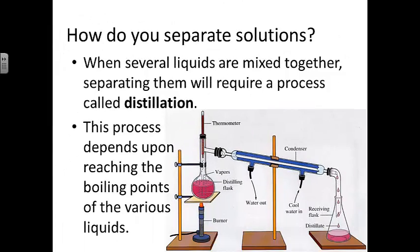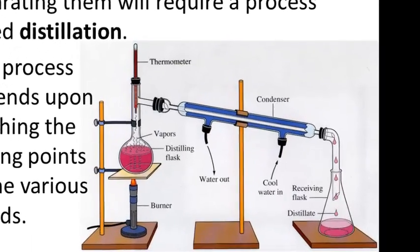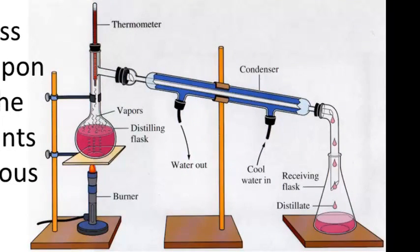To separate homogeneous mixtures or solutions, if you have several liquids mixed together you could use a process known as distillation. This process depends upon reaching the boiling points of the various liquids. As each new boiling point is reached, that particular component will boil off as a vapor and cool as it passes through the condenser — a central cylinder where cold water circulates around the outside. As it cools, the vapor condenses and starts dripping out the other end into a receiving flask. The liquid coming out is known as the distillate.